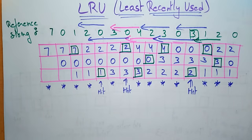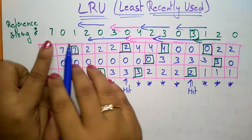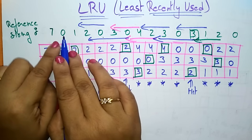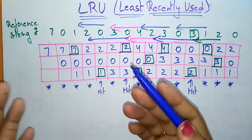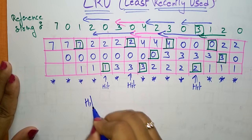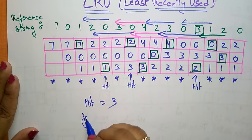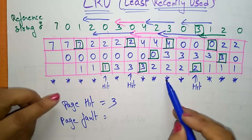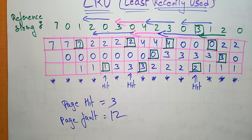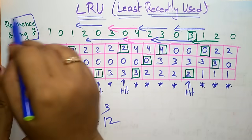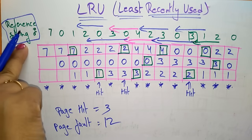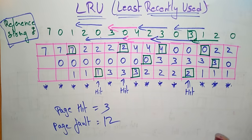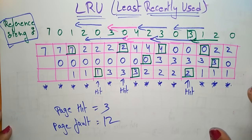So this is how the Least Recently Used page replacement algorithm works — we replace the page which is least recently used. The most recent access is called most recently used and the oldest access is the least recently used. In this example, the total hits are 3 and the total page faults are 12. The page hits and page faults are completely based on the reference string given — the hit ratio and fault ratio will be different for different reference strings. Thank you.